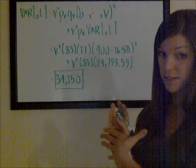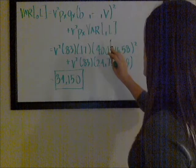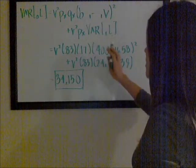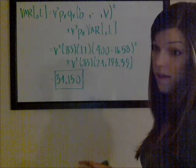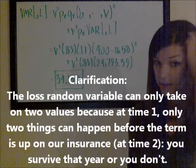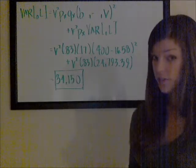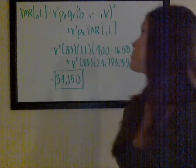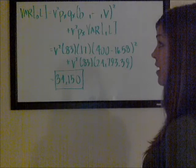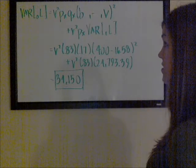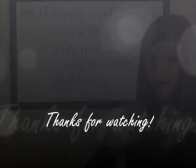That's it for this problem. One more thing to note: for the variance of the loss random variable at time 1, since it can only take on two values — one if you live, one if you die — we could have actually used the Bernoulli shortcut to calculate that variance. I have a video on that as well if you want to check it out. I hope that made sense. If it didn't, please let me know. Happy studying!